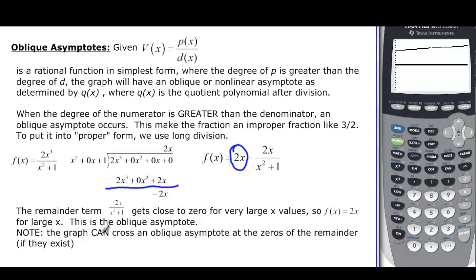And it says, note that graph can cross the oblique at the 0s of the remainder. So here, if it's going to cross, it's going to cross at 0, because this and the numerator would be at 0.